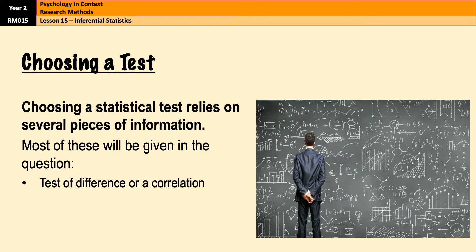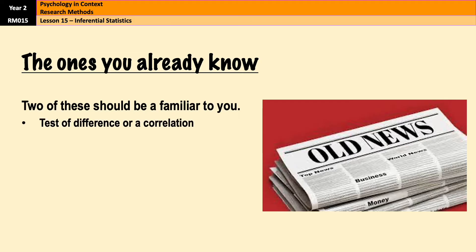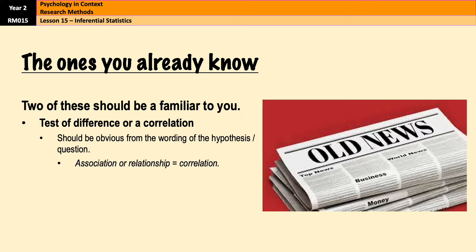Those pieces of information are: whether your study is a test of difference or a correlation, what the design of your study is, and what level of measurement is being used. The first two should be fairly familiar. If your study is looking for a relationship or association between two variables, you are looking at correlational research, whereas if you are looking at the difference between two groups, you are looking at a test of difference.